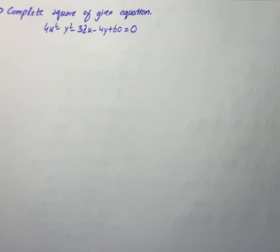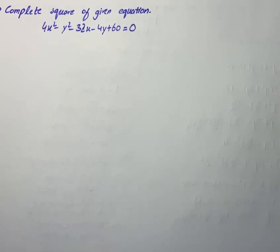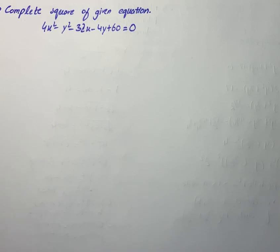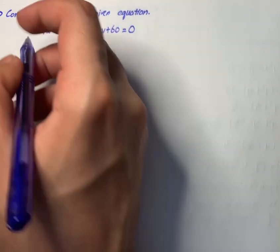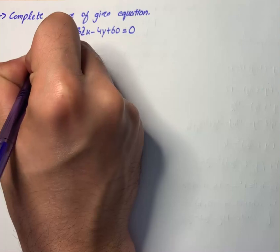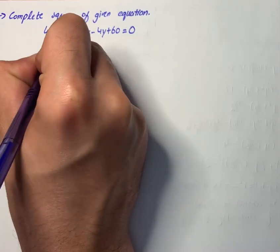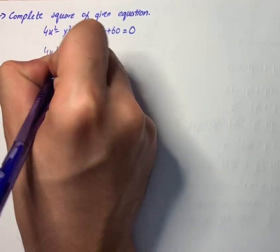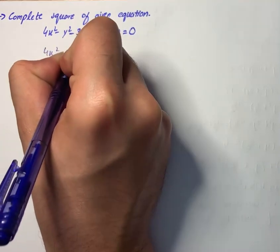Here we have to complete the square. We know that the equation has x and y squared terms on the left and zero on the right, so the equation represents a pair of lines crossing each other at the point (4, −2). We will simplify: we have 4x² − y² − 32x − 4y + 60 = 0.